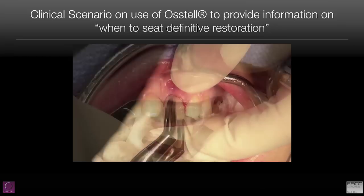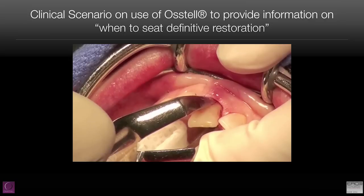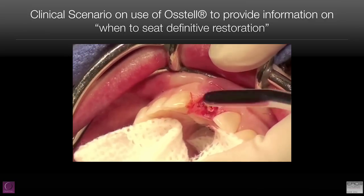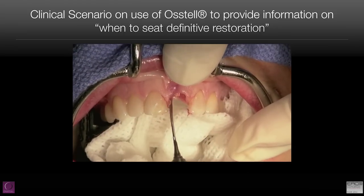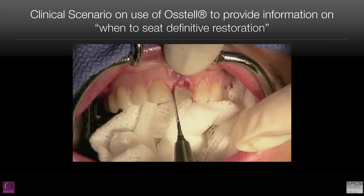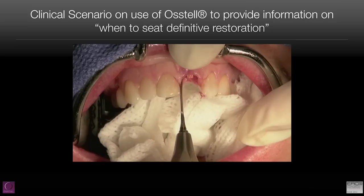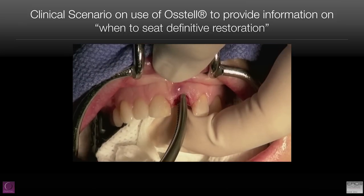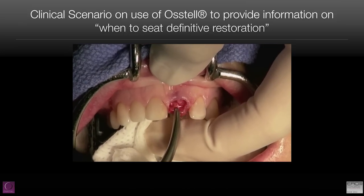You can do it with a flipper, or a mucoadhesion prosthesis, or a bonded bridge, or you can load that implant. But if you're planning to load that implant, how do you determine if that implant is sufficiently stable to support the prosthesis?